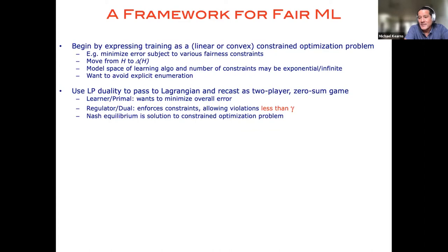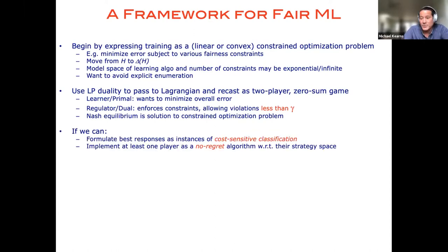And so now we've kind of just traded one apparently difficult problem for another difficult problem which is how do we lay our hands on the Nash equilibrium or an approximate equilibrium of this two-player game in which both players may have an infinite or exponentially large action space or pure strategy space. And so it turns out that if you can in a machine learning context now if you can formulate the best responses of each player as an instance of what's called cost-sensitive classification.